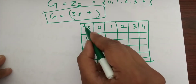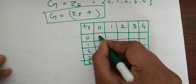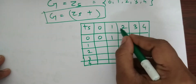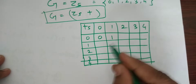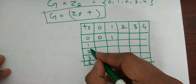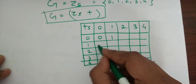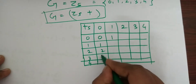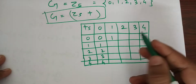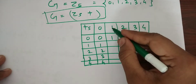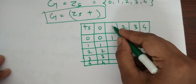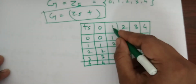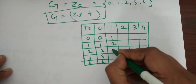So add here. 0 plus 0 is 0. 0 plus 1 is 1. 0 plus 2 is 2. 0 plus 3 is 3. 0 plus 4 is 4. Then 1 plus 0 is 1. 1 plus 1 is 2. 1 plus 2 is 3.